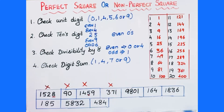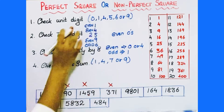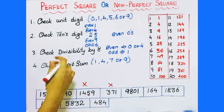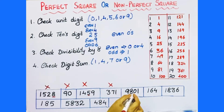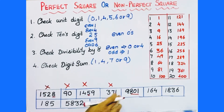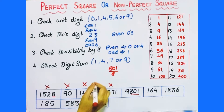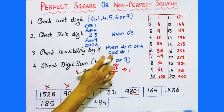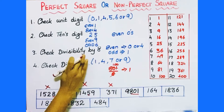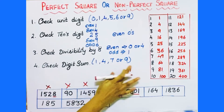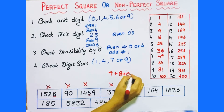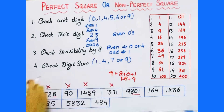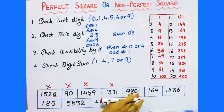Next number is 9801. First test: unit digit is 1 — passes. Second test: tens digit should be an even number — yes, it is 0, an even number — passes. Third test: divisibility by 8. As it is a 4-digit number, take the last 3 digits: 801. Divide by 8 — 100 times 8 is 800, remainder is 1. Since it is an odd perfect square, remainder 1 is expected — passes. Fourth test: digit sum — 9 plus 8 plus 0 plus 1 equals 18, then 1 plus 8 equals 9 — digit sum is 9, which passes. So 9801 passes all four tests and might be a perfect square number.